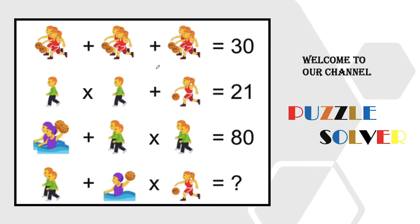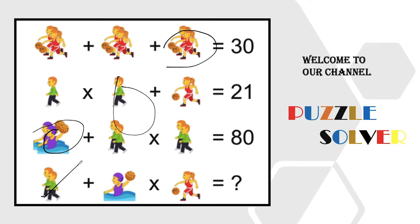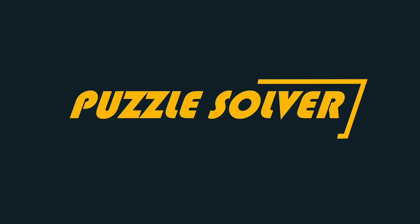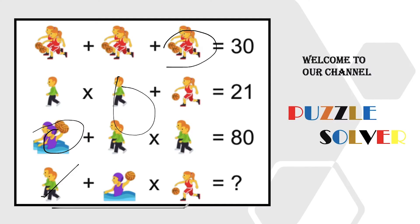The puzzle we have for you today is a gaming puzzle. We have a girl playing with basketball, a boy, and a swimmer with a ball. We have to put their values in the last equation and solve it. Please pause the video and try solving the puzzle within 30 seconds, and mention your answers in the comment section. Your 30 seconds starts now.